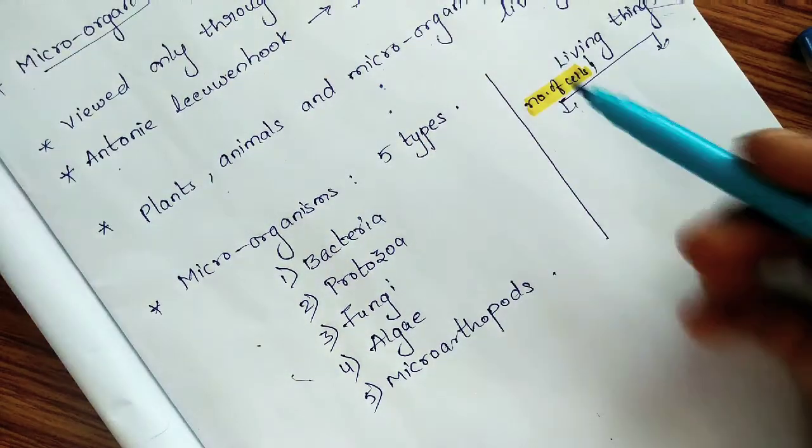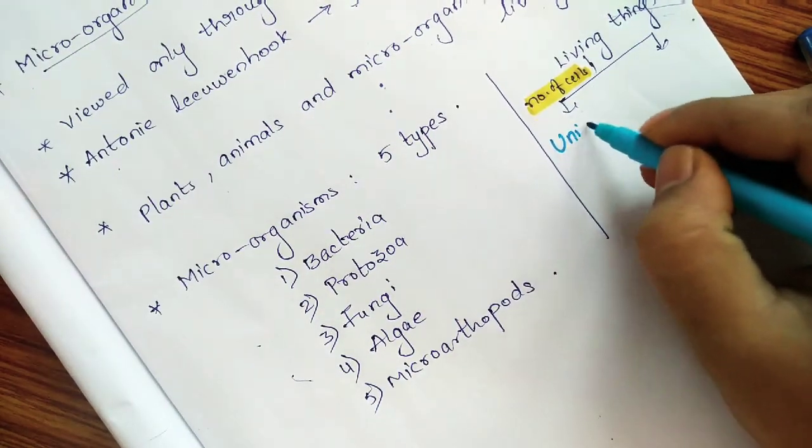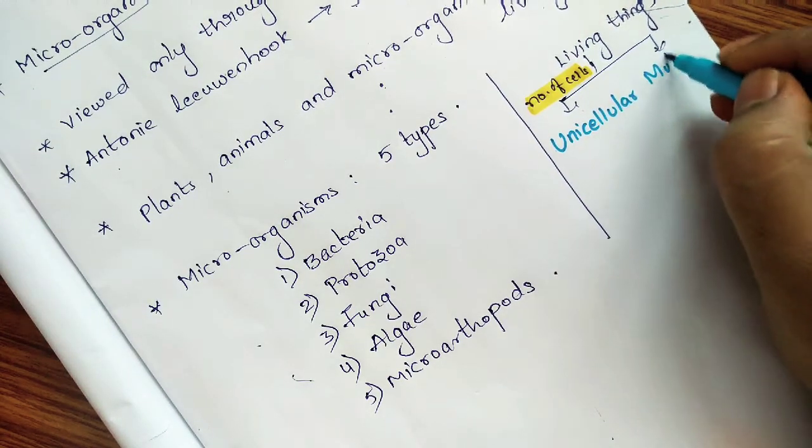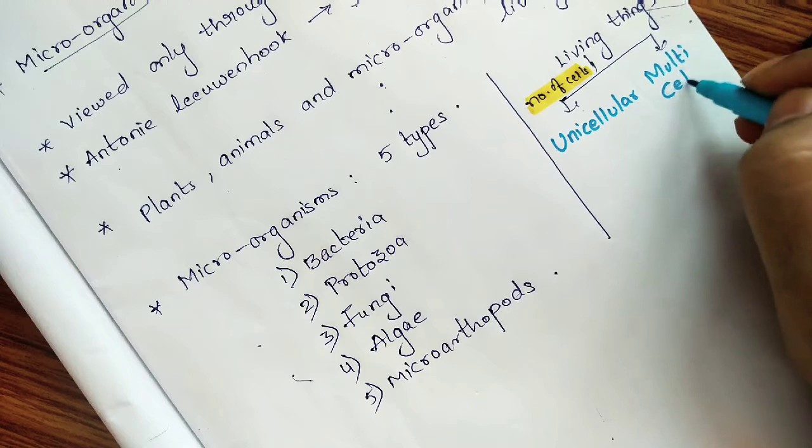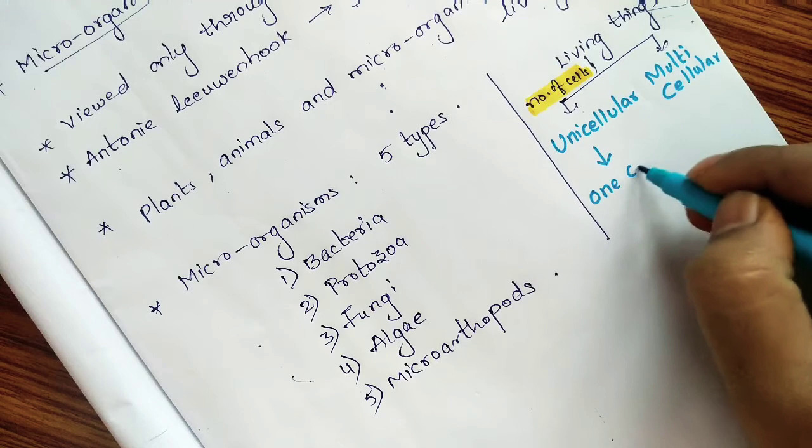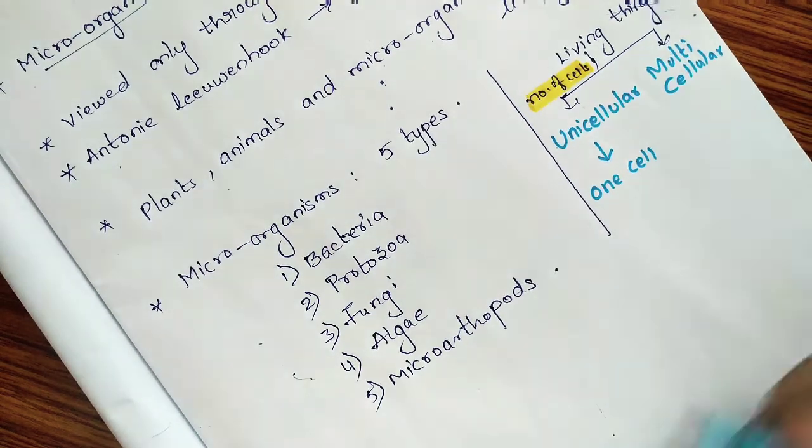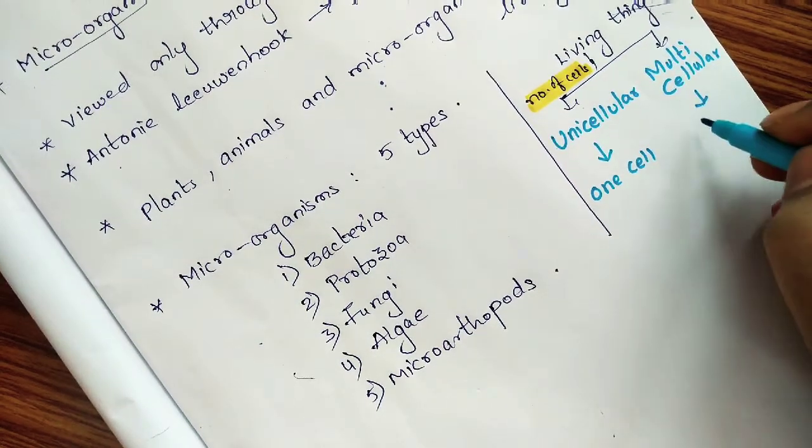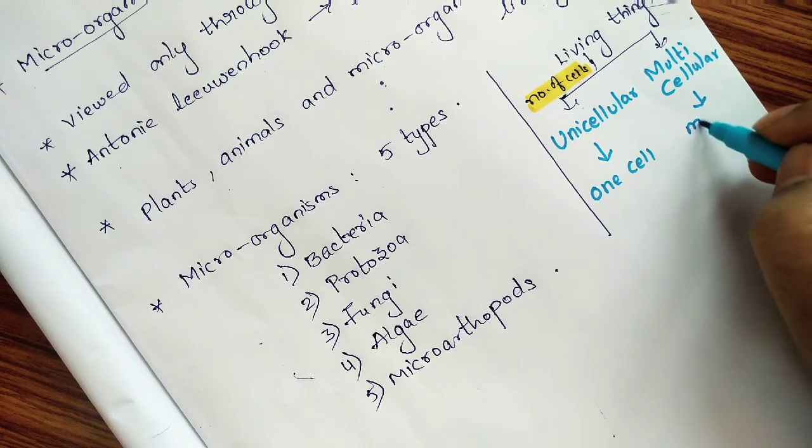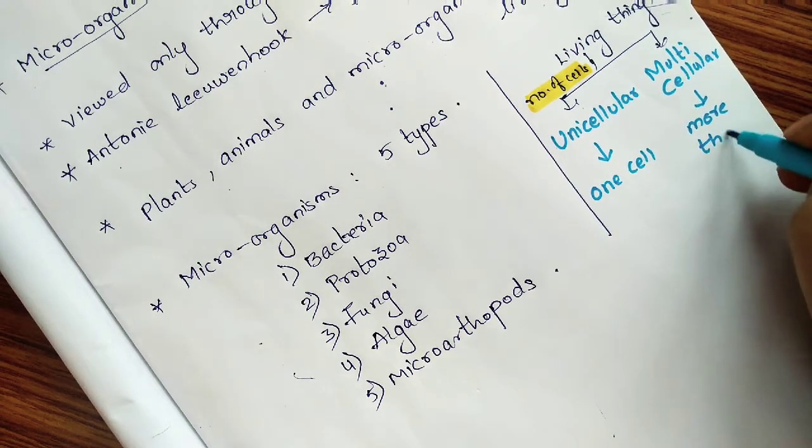First, unicellular organisms and multicellular organisms. In unicellular organisms, only one cell is present in their body. Whereas in multicellular organisms, more than one cell is present.